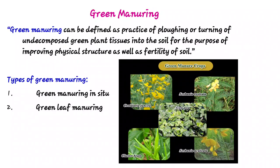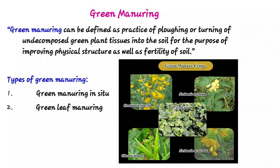Now, the types of green manure crop. There are two types: green manures in situ and green leaf manures. In green manures in situ, the manure crop is grown and buried in the same field.